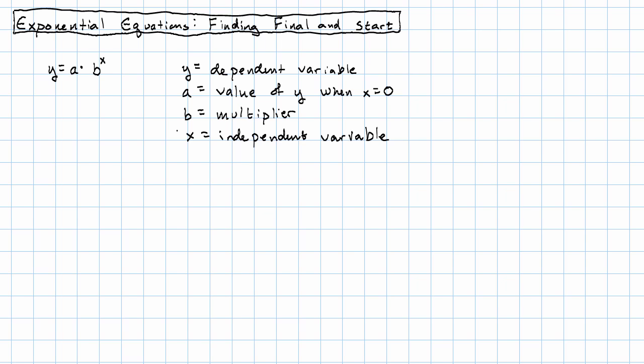It's what Y is multiplied by each time X goes up by 1. In various applications, we might be looking for any one of these numbers. And because this exponential expression behaves differently from anything linear, we need to use different techniques. If the numbers that we know are the values of B and of X, we know exactly what to do.